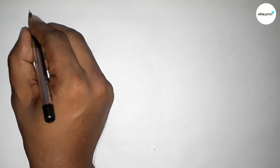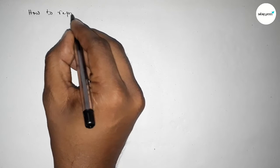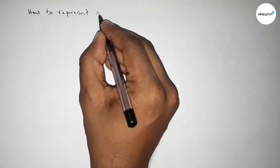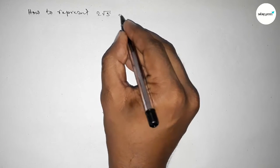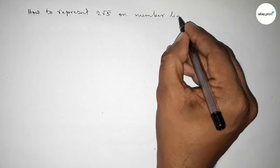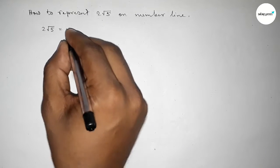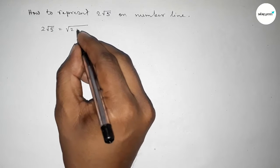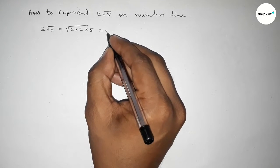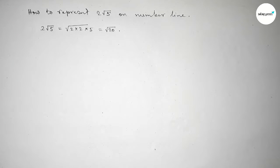Hi everyone, welcome to SI share classes. Today in this video we have to represent 2√5 on number line. Representing 2√5 on number line, so let's start the video. First of all, write here 2√5 equal to 2 into 2 and into 5, so this is √20.